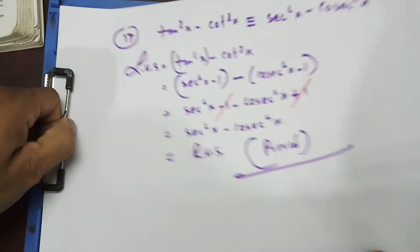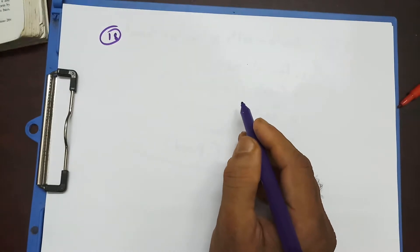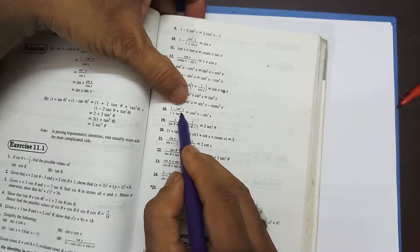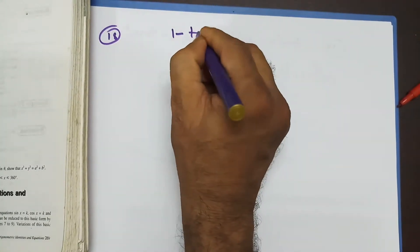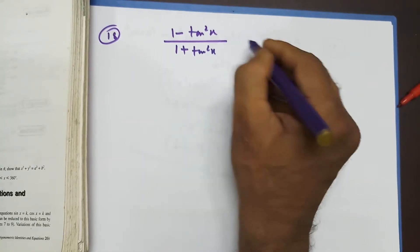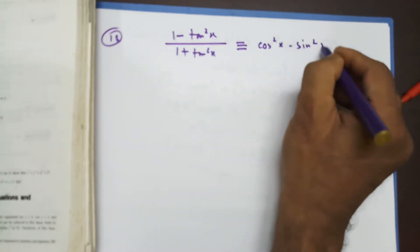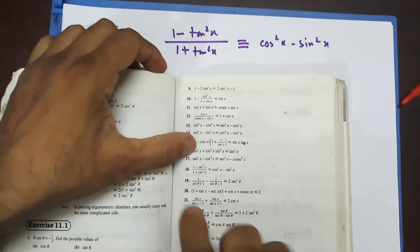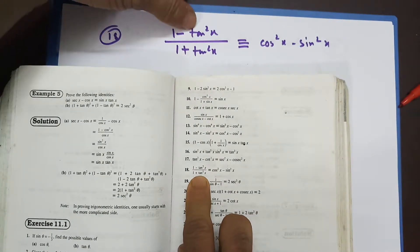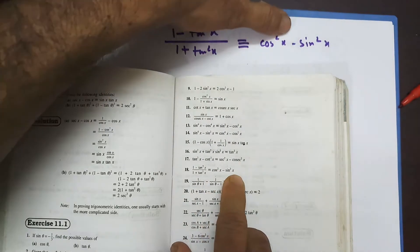I'm going to do one more in this video — question number 18. Question 18 says: (1 minus tan²x) divided by (1 plus tan²x) is identical to cos²x minus sin²x.